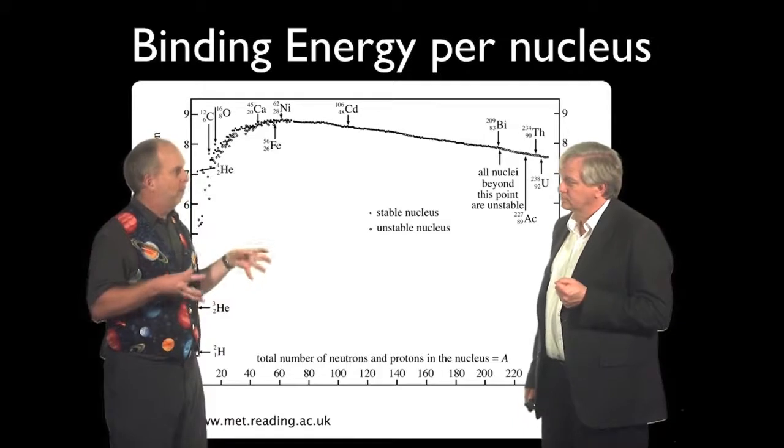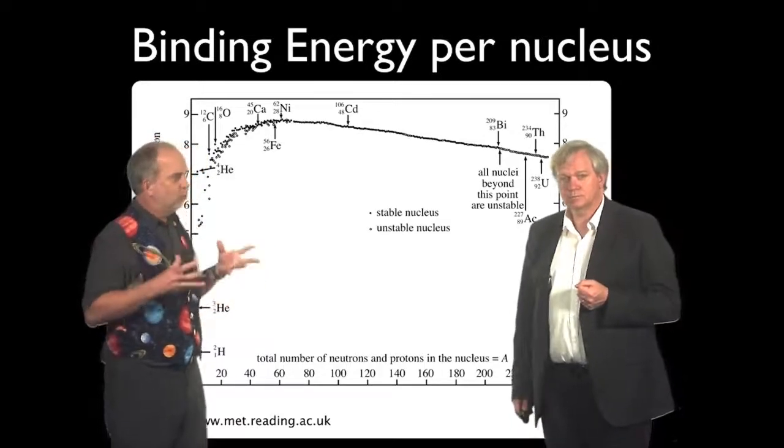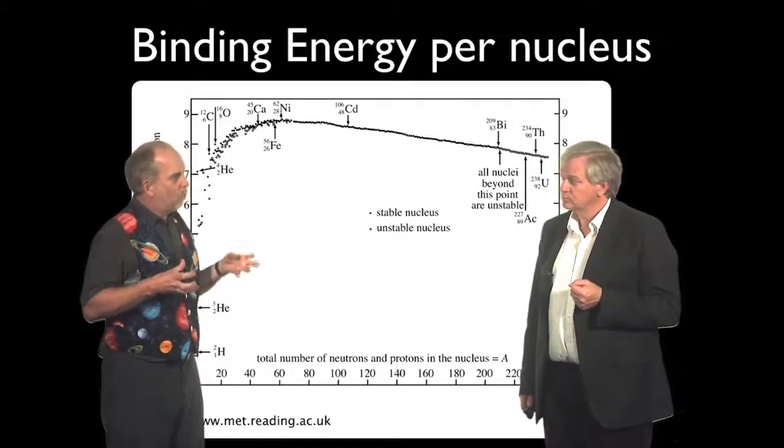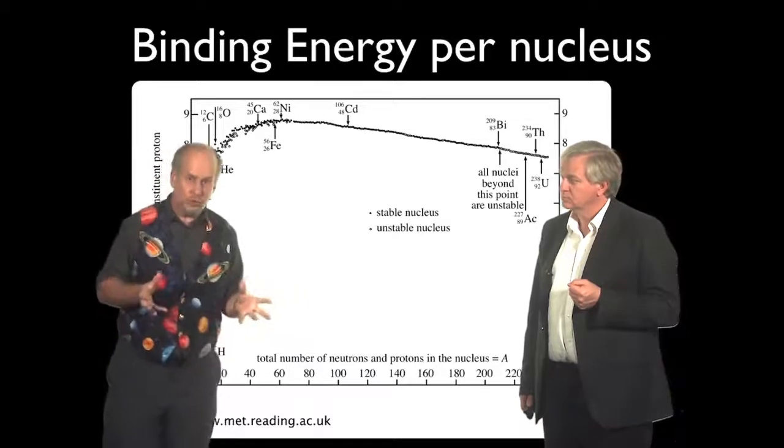That if you do compress them enough, they too will start behaving like a quantum mechanical fluid and maybe give a degeneracy pressure. And because they're more massive than electrons, it will happen at much higher densities. So let's do the calculation and see if this is at all feasible and what would happen if you actually had a star supported not by electron degeneracy pressure but by neutron degeneracy pressure.